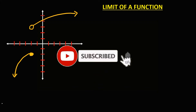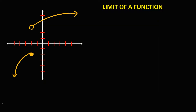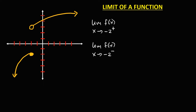Let's work on this problem. Given the graph of a function, we need to find the limit of f of x as x approaches negative 2 from the right, and the limit of f of x as x approaches negative 2 from the left. If the exponent is positive, that's from the right, and if the exponent is negative, that's from the left. In the plane, this is x and y.